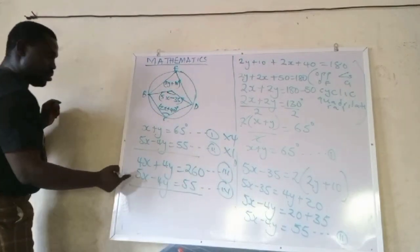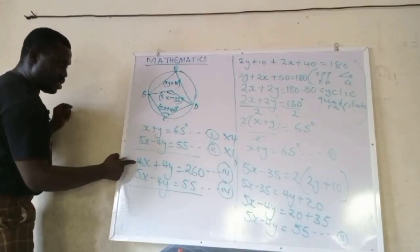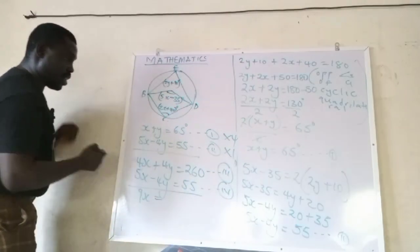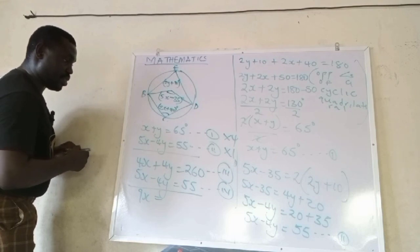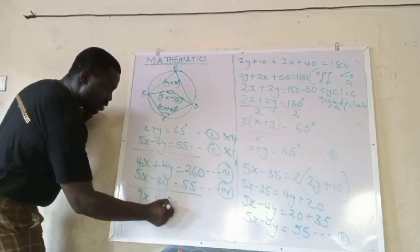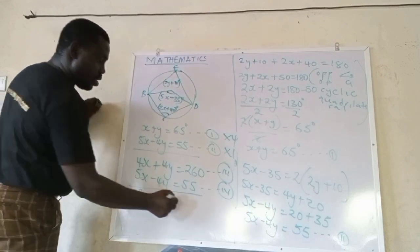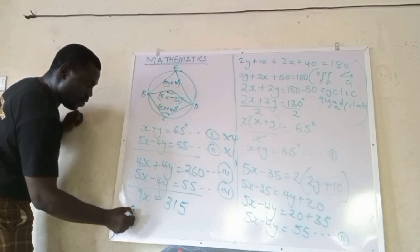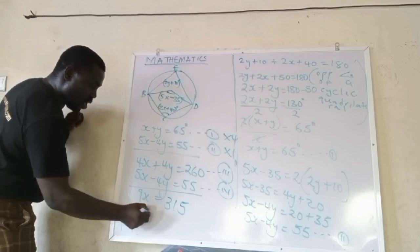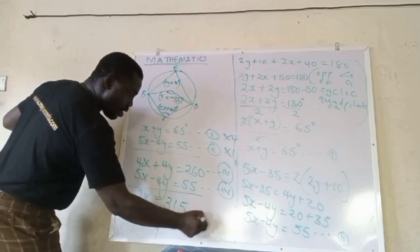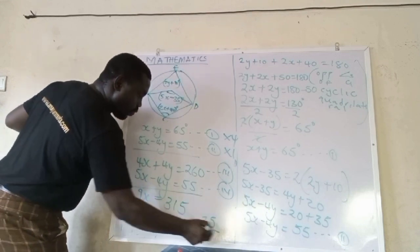Then we have 5x minus 4y equals 55, equation 4. So we can easily add this plus this, that's 9x. Let's add this together. So x therefore, divide both sides by 9, so x is 35.